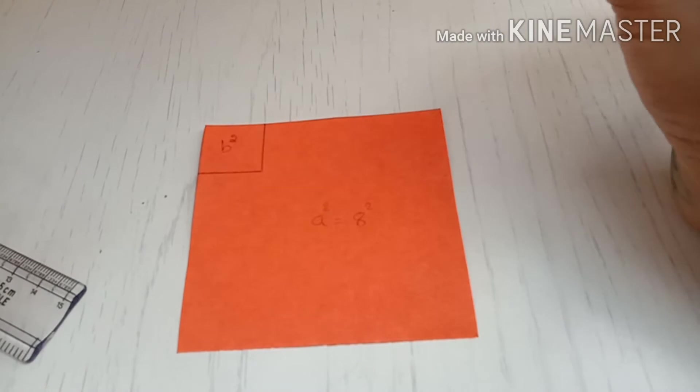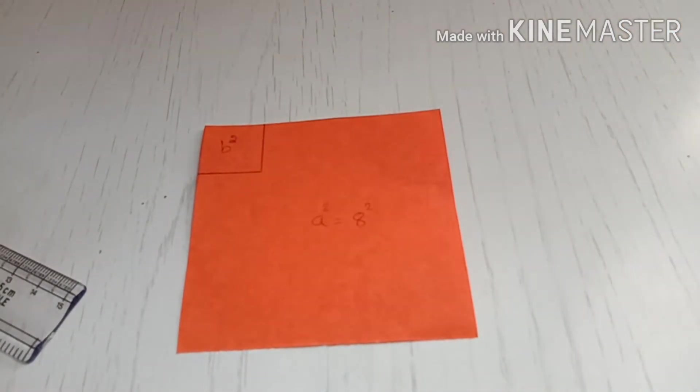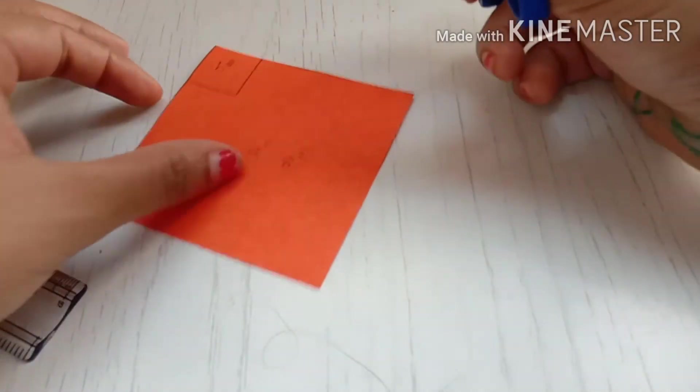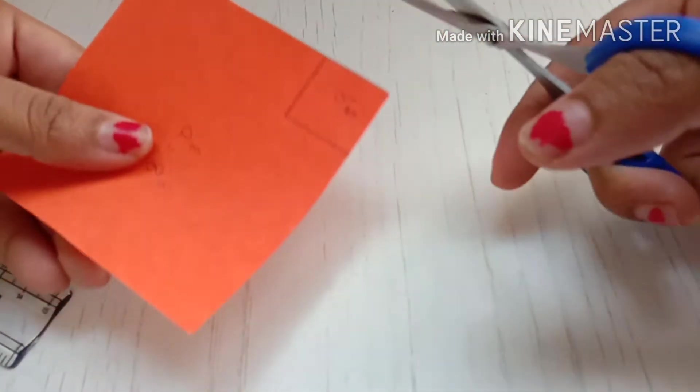is a square minus b square. So minus means I should cut this b square from the a square. I am going to cut it now.